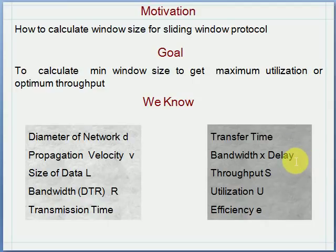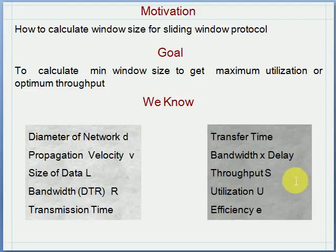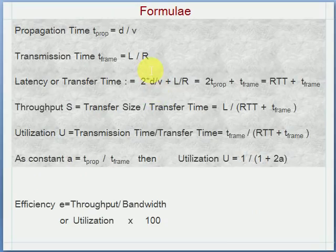Bandwidth and delay are used to know the number of bits on the communication pipe, and with the help of these we can calculate throughput, utilization, and efficiency. These are the set of formulas for your ready reference.